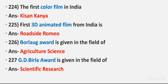Question 224: The first color film in India. Answer: Kisan Kanya. Question 225: First 3D animated film from India is. Answer: Roadside Romeo. Question 226: Borlaug Award is given in the field of Agriculture Science. Question 227: Jiri Virala Award is given in the field of. Answer: Scientific Research.